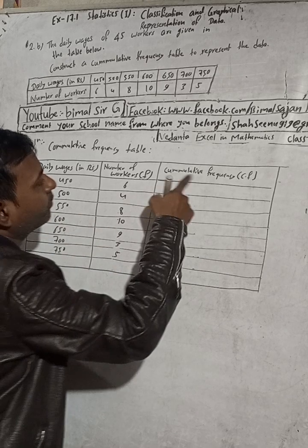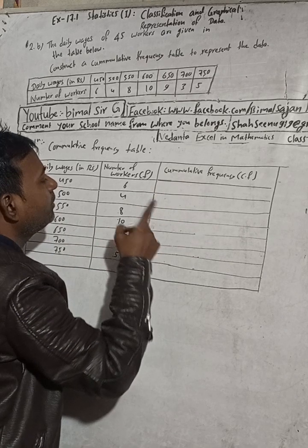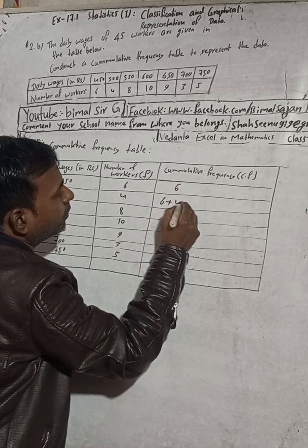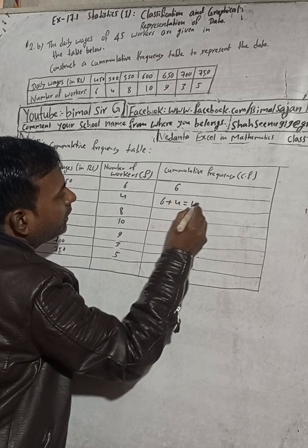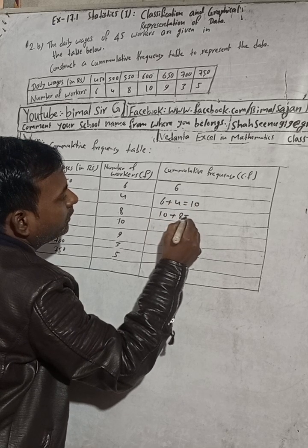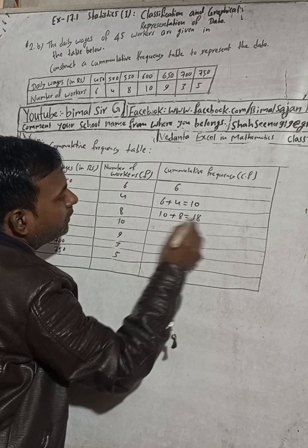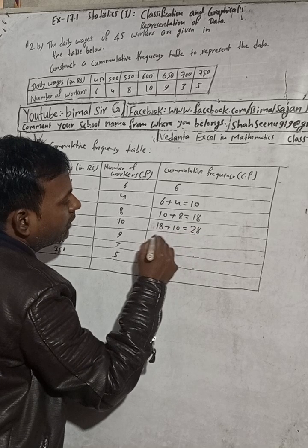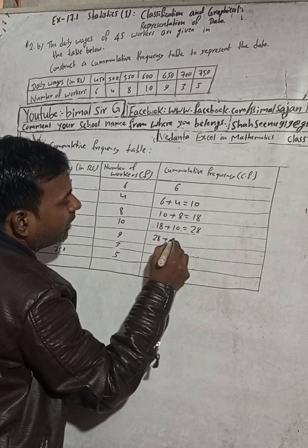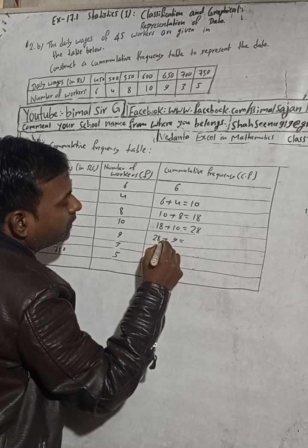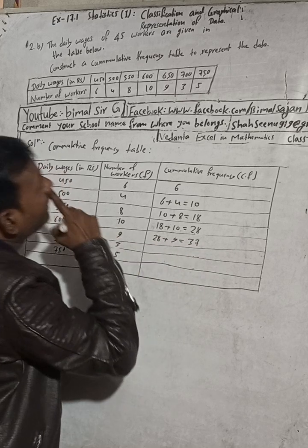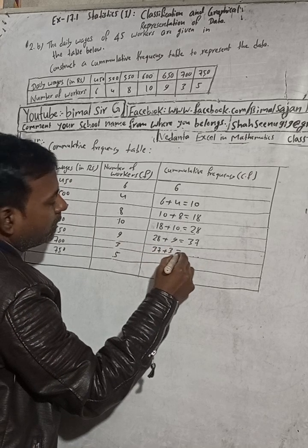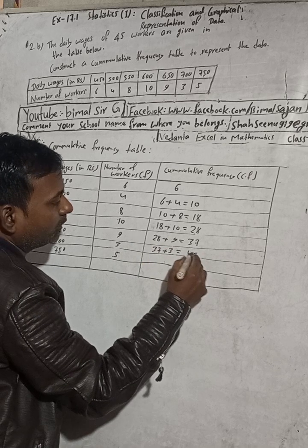Now we have to find the cumulative frequency. Cumulative frequency means: 6 as it is, then 6 plus 4 equals 10, then 10 plus 8 equals 18, then 18 plus 10 equals 28, then 28 plus 9 equals 37.